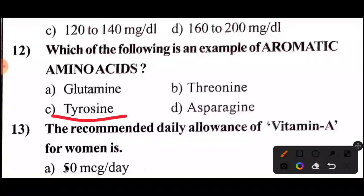Question 12: Which of the following is an example of an aromatic amino acid? The correct answer is option C, tyrosine. Next question.